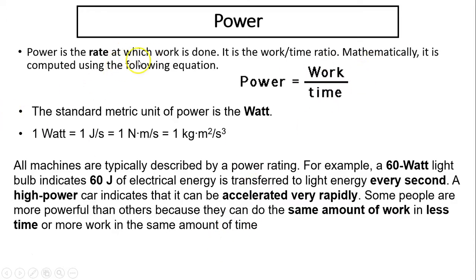Power. Power is the rate at which work is done. It is a work/time ratio. Mathematically, it is computed using this equation: Power equals work over time. We also learned other quantities over time. Velocity is displacement over time. Acceleration is change in velocity over time. Those are all quantity over time ratio quantities.